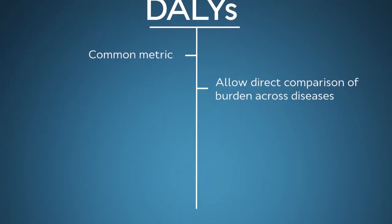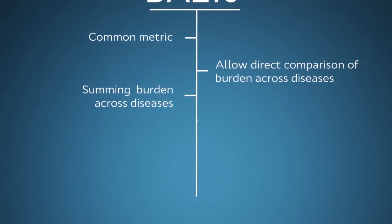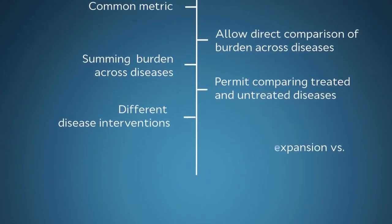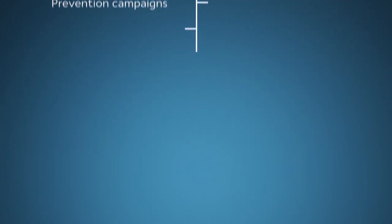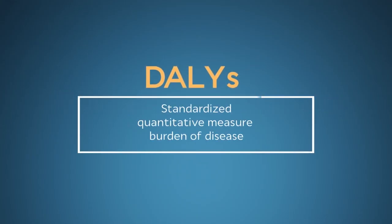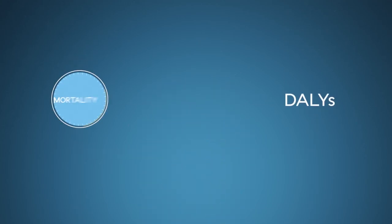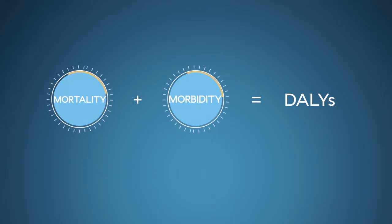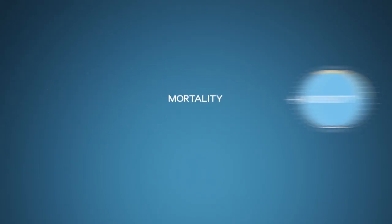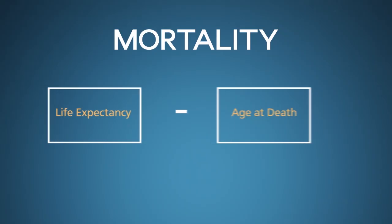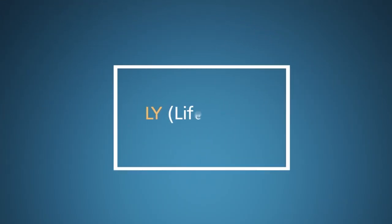DALYs allow direct comparison of the burden of different diseases. They also allow summing burden across diseases. They permit comparing treated and untreated disease. They even make it possible to compare different types of interventions, such as treatment expansion versus prevention campaigns. DALY stands for disability-adjusted life years. Simply put, a DALY is a standardized quantitative measure of the burden of disease. It combines mortality — the years of life lost due to premature death — with morbidity, a measure of all non-fatal clinical effects such as illness episodes or chronic disability. Think of this as the LY in DALY, or life years lost due to disease.